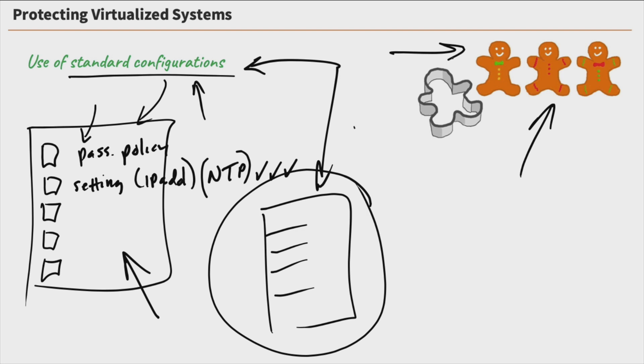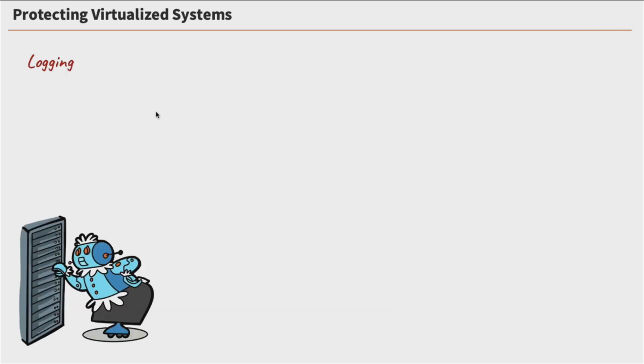We can run tests against these systems to ensure that they match up with our policies to make sure something wasn't missed before we put them into production. Standard configs are super important. They will save your tail a lot of times, and that way your environment is standardized when you put these systems out there. Once we get all those systems out there, we're going to need to be performing logging. All of our systems need to perform logging of the events that are occurring on there.